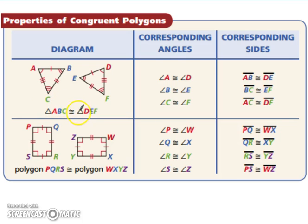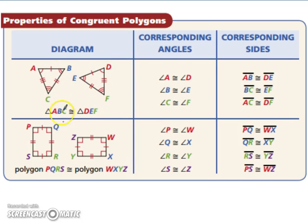Triangle ABC is congruent to triangle DEF because all three angles are congruent to each other. Angle A and angle D are congruent, angle B and E, C and F. And the corresponding sides are all congruent. The same with a polygon — polygon PQRS is congruent to polygon WXYZ. Corresponding angles are congruent and corresponding sides are congruent, therefore the two polygons are congruent.